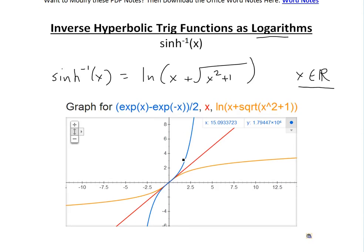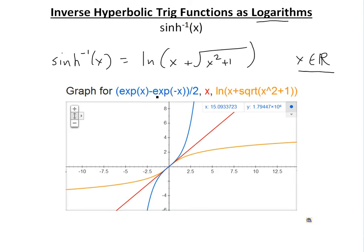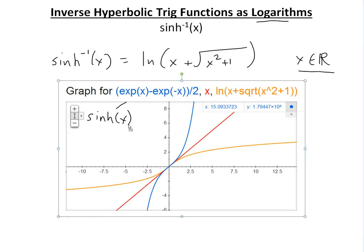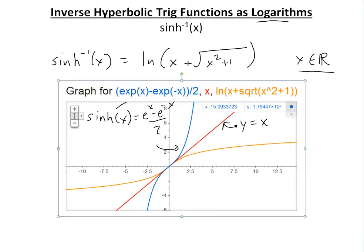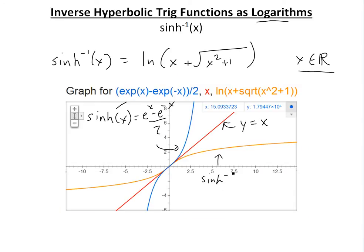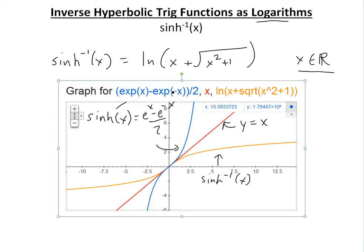I have three functions graphed here. The first, in blue, is just hyperbolic sine of x — sinh(x) — which by definition equals (e^x − e^(−x)) / 2. The red line is y = x. As shown in my earlier videos, the inverse of a function is its mirror image reflected about the y = x line. So the orange curve is the inverse hyperbolic sine of x.